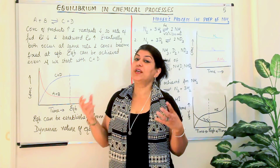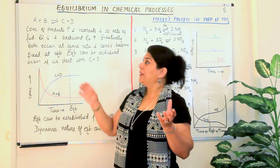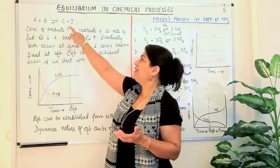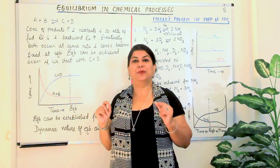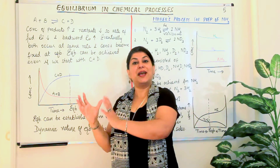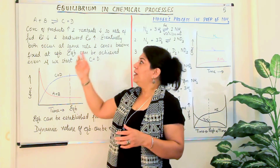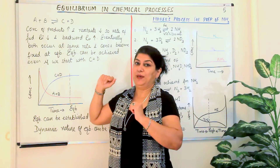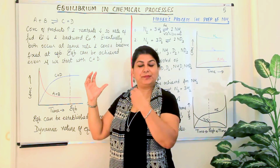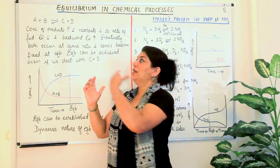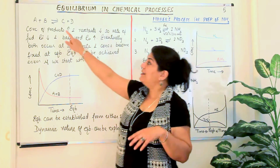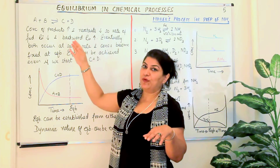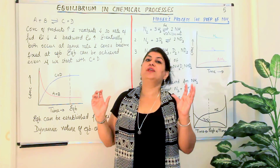What happens to the concentrations of the reactants and products? Initially, when you bring the reactants, the concentration of the products was zero because no product has formed yet — until the reactants react, you are not going to have products. Let's say we had one mole of A and one mole of B; as the reaction proceeds, both reactants are consumed, so the concentration of the reactants continuously decreases. At the same time, products are being formed and the concentration of the products goes on increasing.